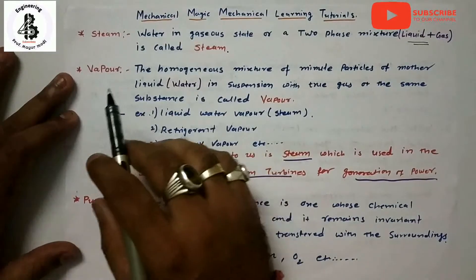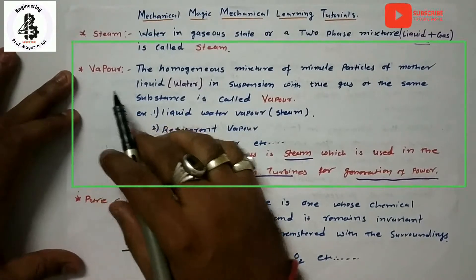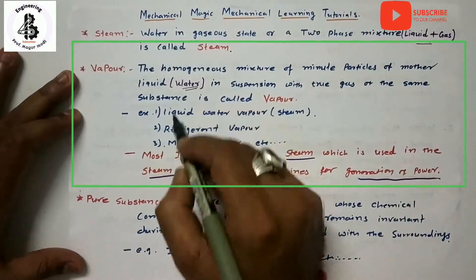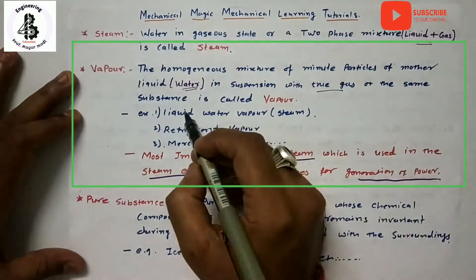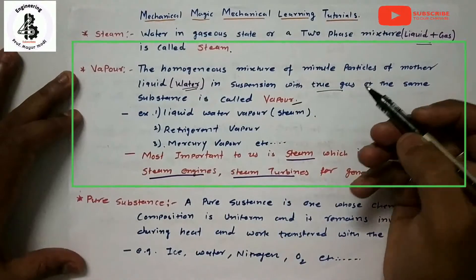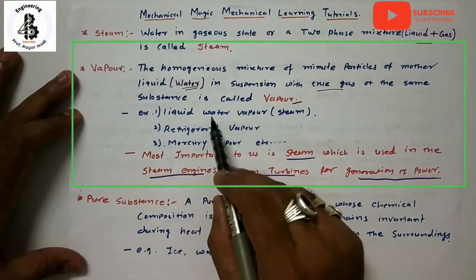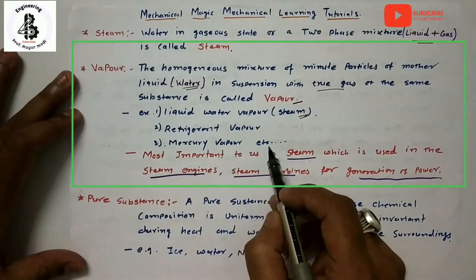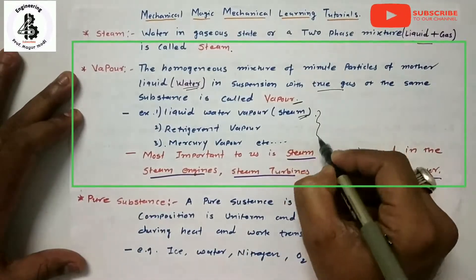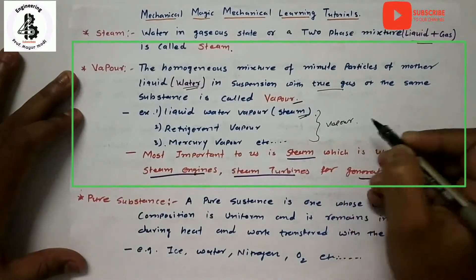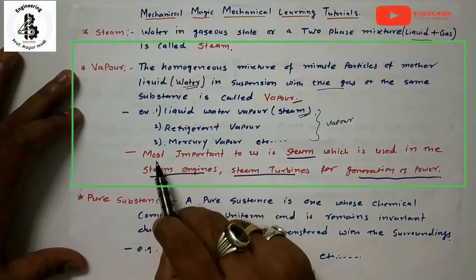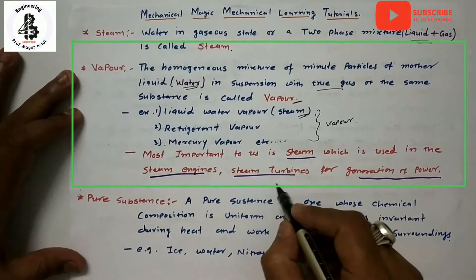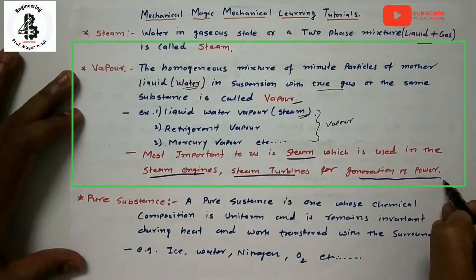Another term is vapor — the homogeneous mixture of minute particles of liquid water in suspension with the true gas of the same substance. For example, liquid plus water vapor represents a vapor state. Refrigerant vapor, mercury vapor, etc. are all considered components of vapor. Steam is most important as it is used in steam engines and steam turbines for the generation of power or electricity.